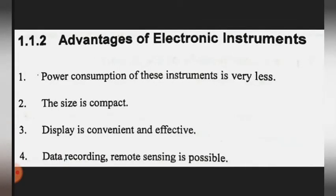The advantages of the electronic measurement system are: first, power consumption is very less; second, size is compact; third, display is convenient and effective; and fourth, data recording and remote sensing is possible. This completes the block diagram description.